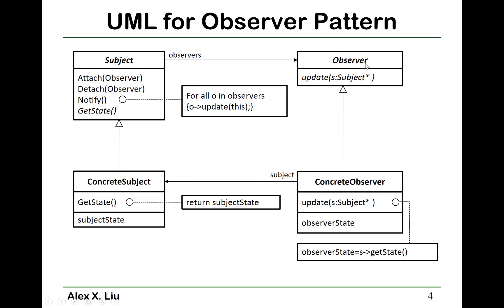On the right-hand side is the observer class hierarchy. You have one observer, which is the base class, and it is also abstract. It has a pure virtual function: update. In the update, the concrete observer receives a subject pointer. You may have multiple concrete observers that inherit from this observer.